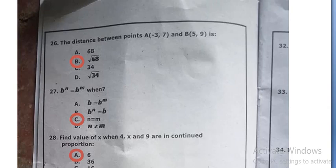Find the value of x when 4, x and 9 are in continued proportion. 6, option A.